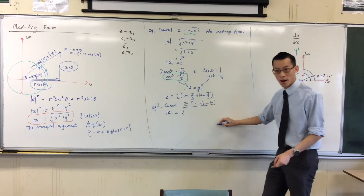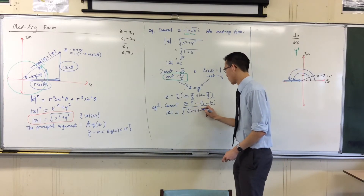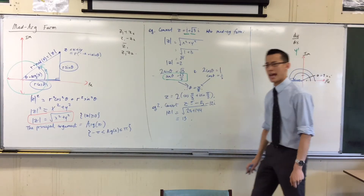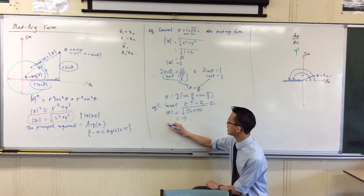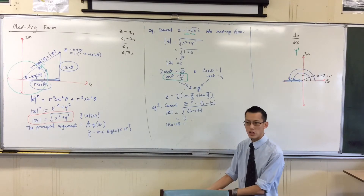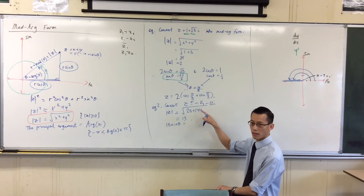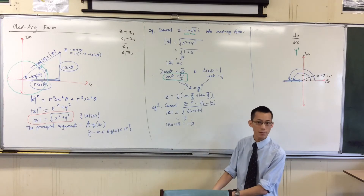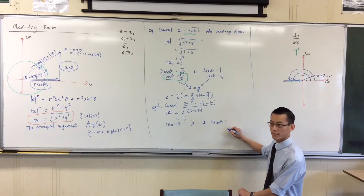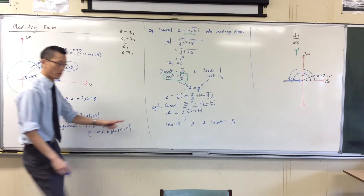So the modulus is the square root of 5 squared plus 12 squared — that's 25 plus 144 — I happen to know that's 13. There's my modulus. Now let's work out our angle. I've got 13 sin θ — careful — the vertical part is minus 12, and I've got 13 cos θ and I've gone to the left so it's minus 5.